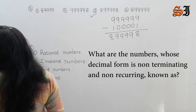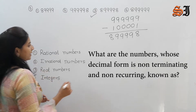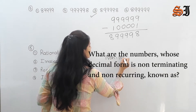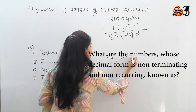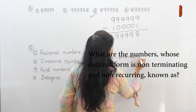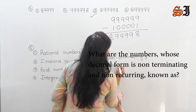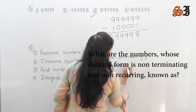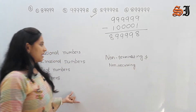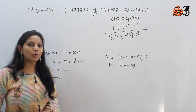Sixth question: What are the numbers whose decimal form is non-terminating and non-recurring? There are 4 options — 4 types of numbers with the property of being non-terminating and non-recurring.